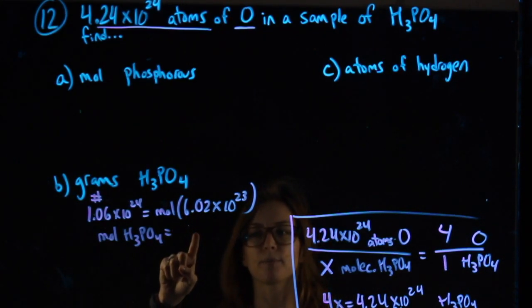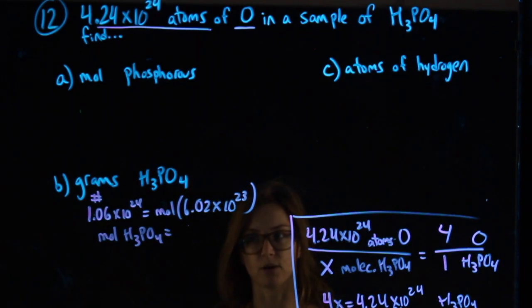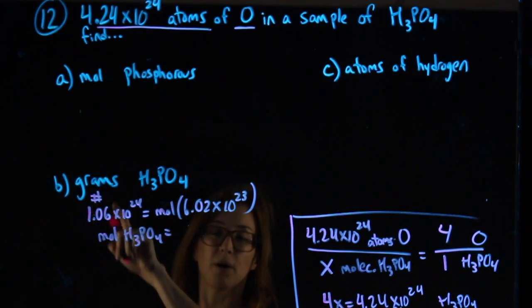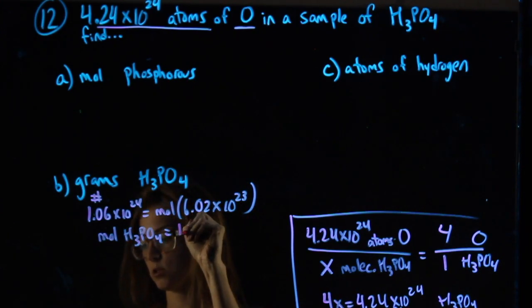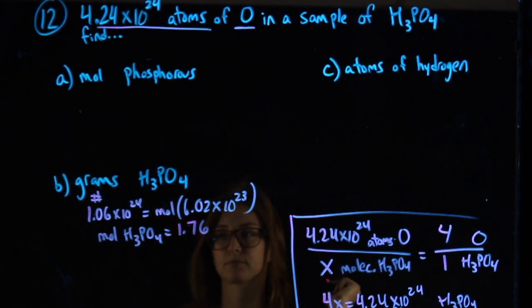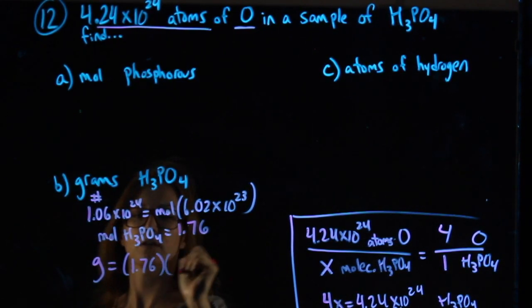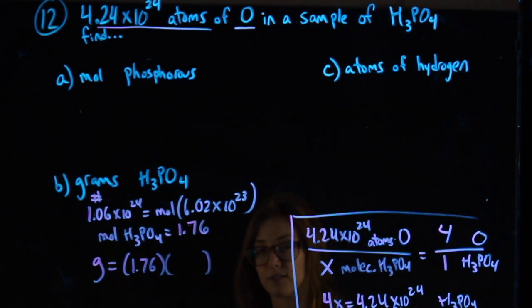I'm going to want to be able to find this number later to use it in one of the other parts. So my moles of the whole thing, which I know it's the whole thing because these were molecules of the whole thing, is 1.76. I want grams, so grams equals those moles times the molecular weight of H3PO4.